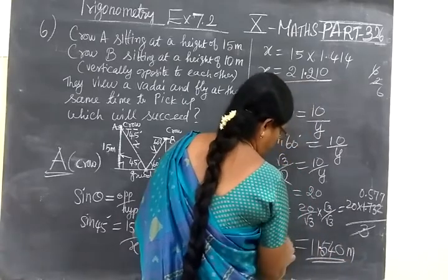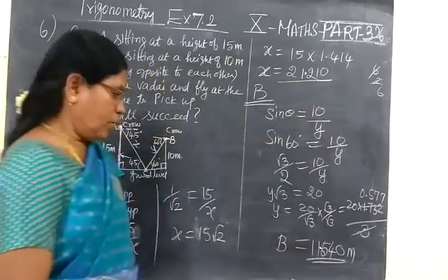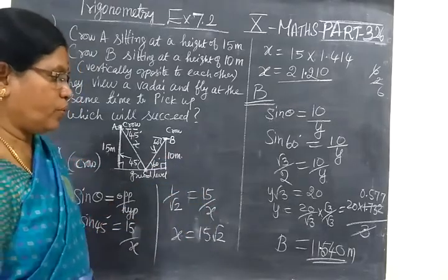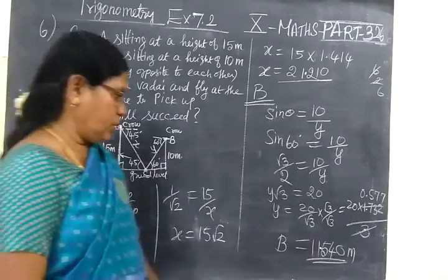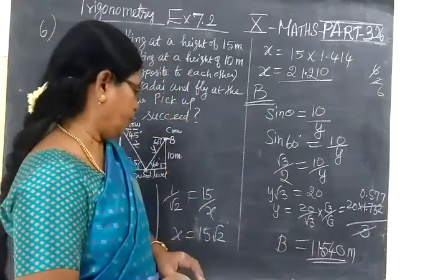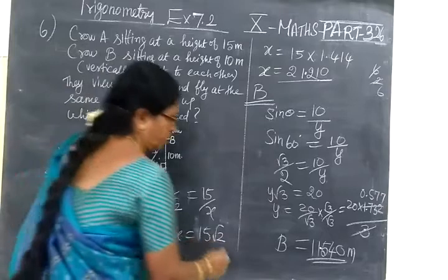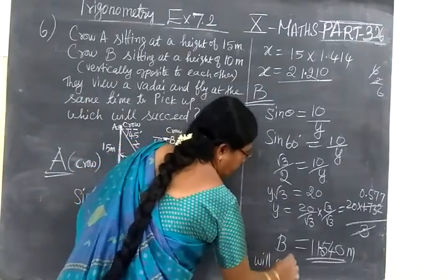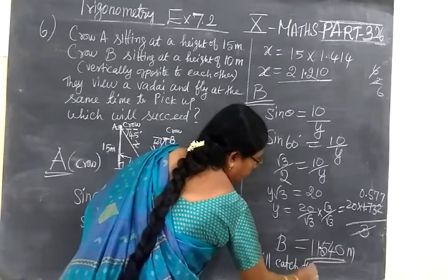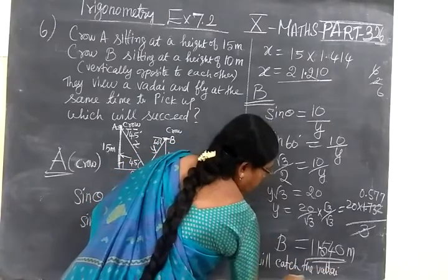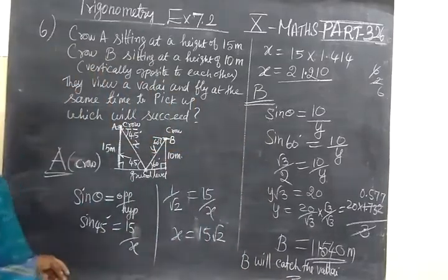So Crow B has to travel 11.54 meters. This is shorter distance. Crow A is 21.21, so definitely B will catch the vadai. B will catch the vadai since distance is shorter than A.